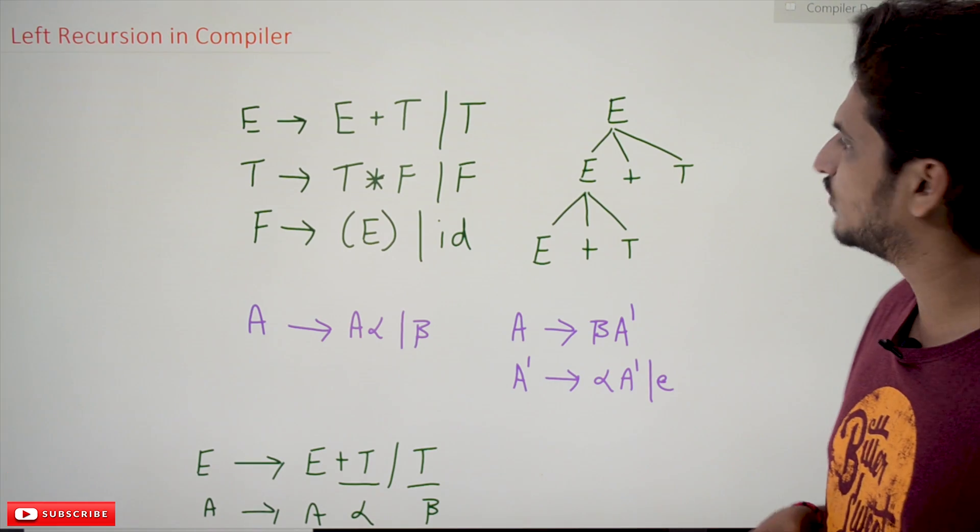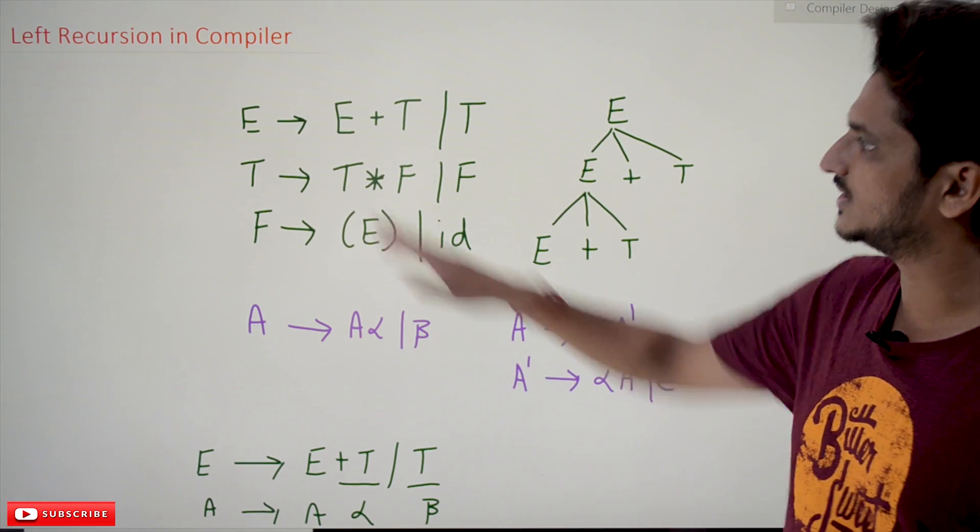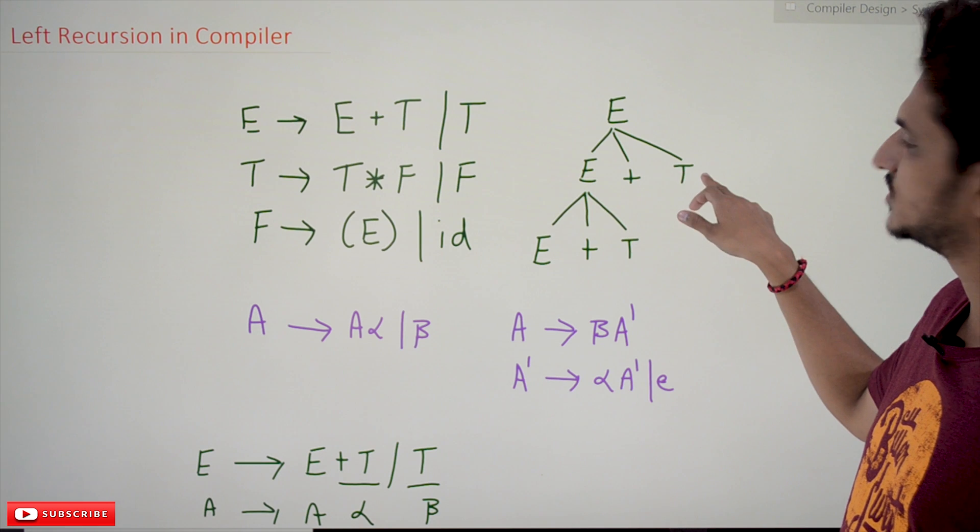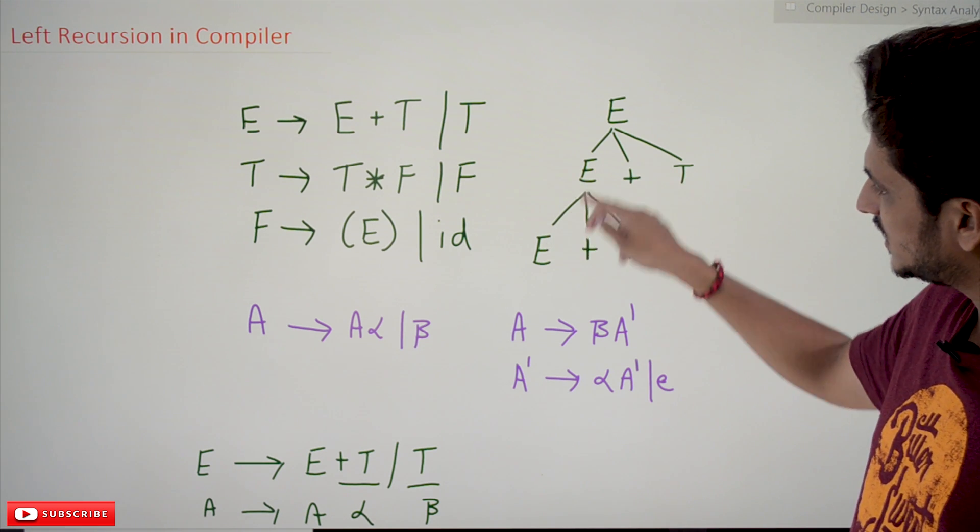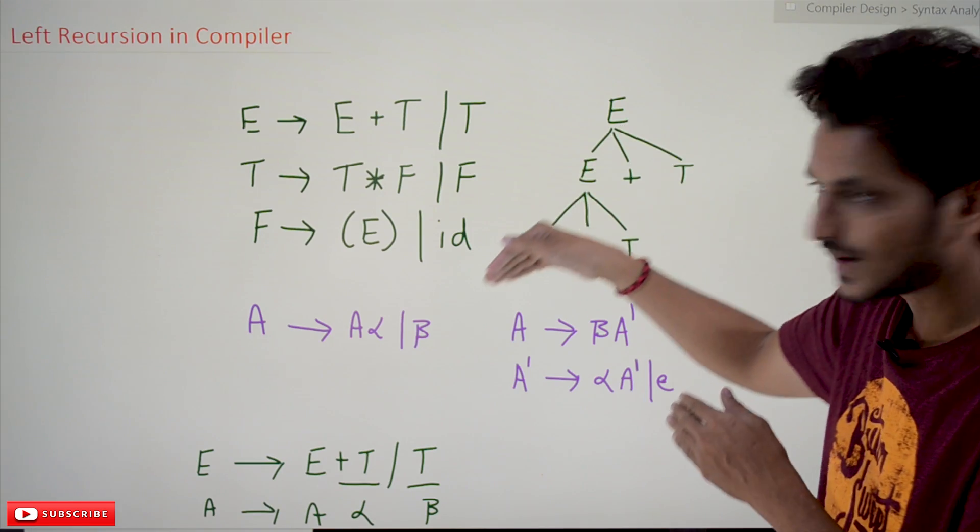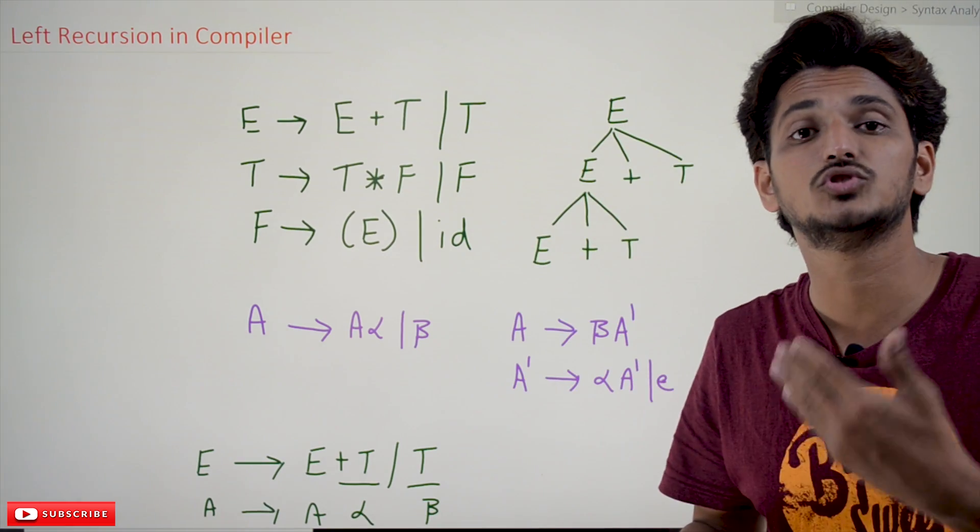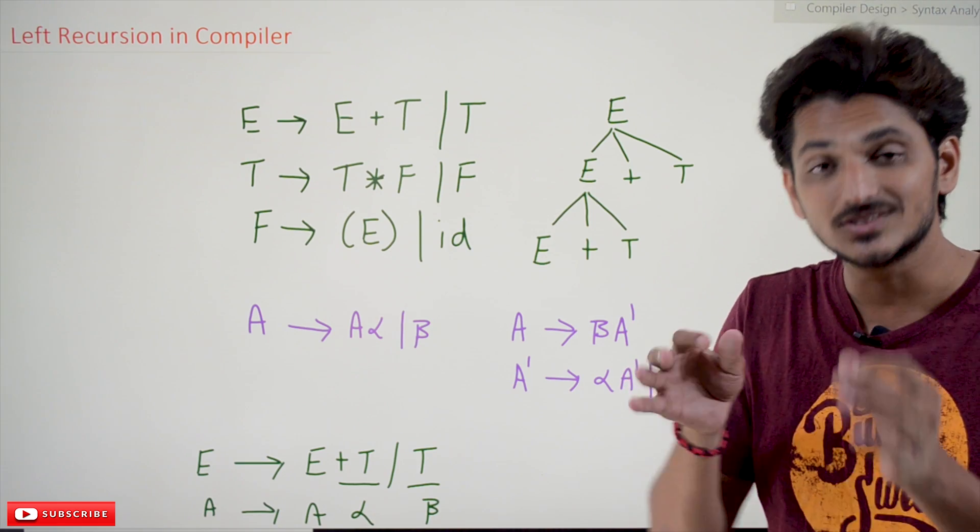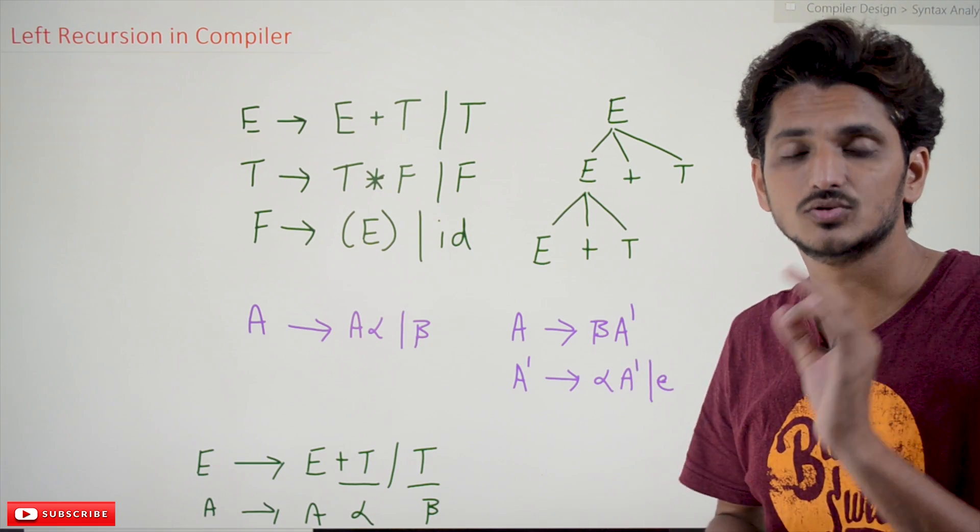Let's try to understand what left recursive grammar means. This is a left recursive grammar: E tends to E plus T. Again expand E, E tends to E plus T. Like that, we keep on expanding E. Where we have to stop, we don't know. That is the problem with left recursive grammar. That's why in real time we should eliminate that left recursion.